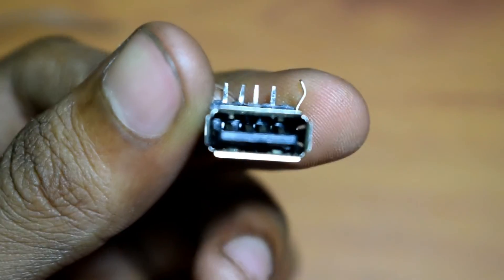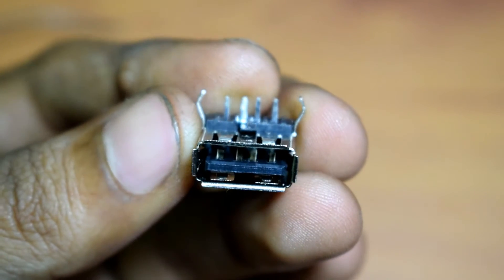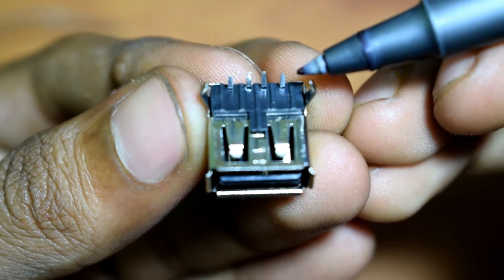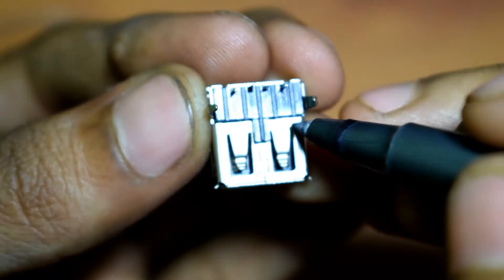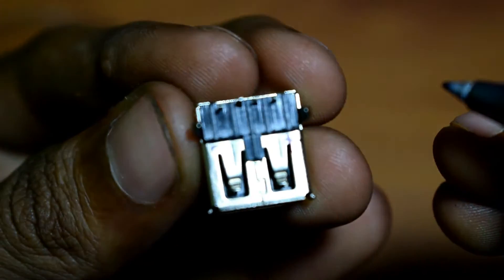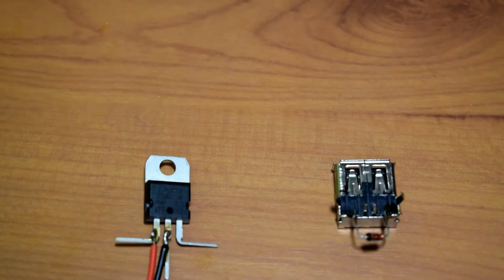In this USB you have to identify which is positive and which is negative. Hold the USB facing towards you, and the right corner will be positive and the left corner will be negative. Mark those on the USB adapter; it will be helpful for you.